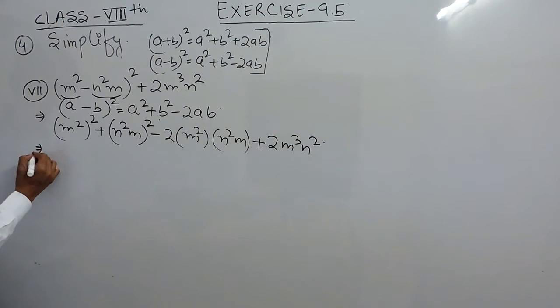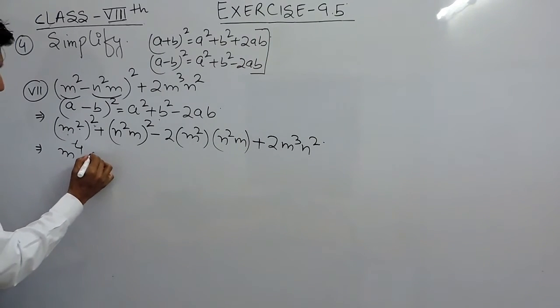Now let's solve this. This is (m²)² means we know that whenever the powers are like these, the powers get multiplied. So this will become m⁴. Similarly here also, this is (n²m)².